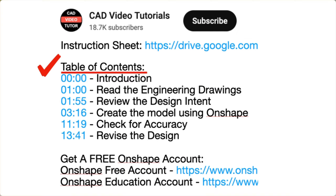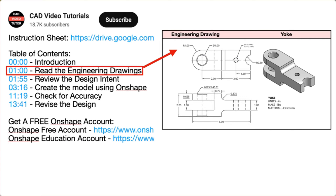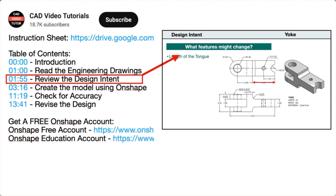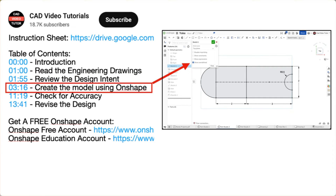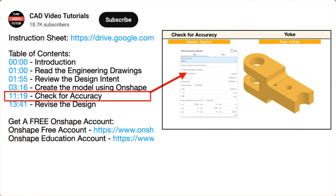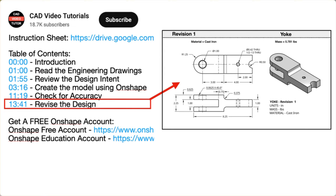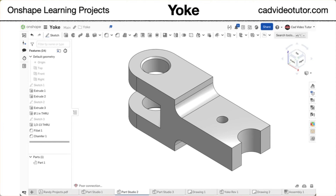The video instruction is organized into five segments. In segment one, you will read the engineering drawings. Segment two will establish the design intent. In segment three, you will create the part model using Onshape. Next, you will check the accuracy of your model by checking its mass properties. Last, you will check the design intent by making changes to the model to see if it will update correctly. Now you are ready to begin the project.